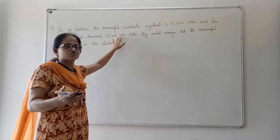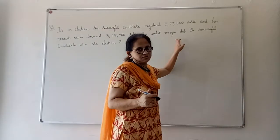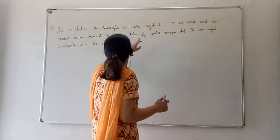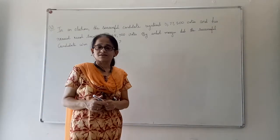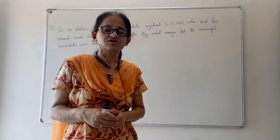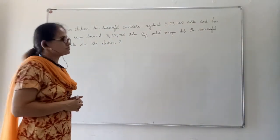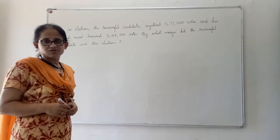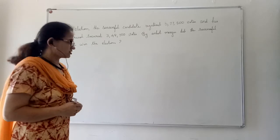Congress got less votes, so they lost the election. By what margin did the successful candidate win the election? That means, the successful candidate got how many more votes, so that he won the election? In this case, the operation involved will be subtraction.